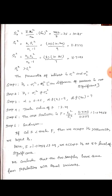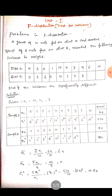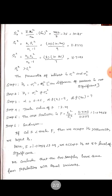Then finally we find capital S1 square and capital S2 square, which are the sample variances. The formula is: capital S1 square equals N1 times s1 square divided by N1 minus 1, the degrees of freedom for sample 1. Substituting s1 square equals 10.24, we get capital S1 square equals 11.3.